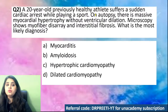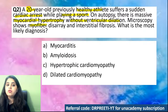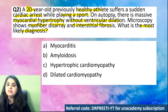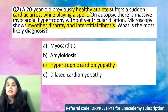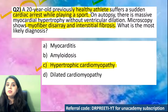Question number two: A 20-year-old previously healthy athlete suffers a sudden cardiac arrest while playing a sport. On autopsy, there is myocardial hypertrophy without ventricular dilatation. Microscopy shows myofiber disarray and interstitial fibrosis. What is the most likely diagnosis? The classical case — sudden death in a young athlete is indicative of hypertrophic cardiomyopathy.